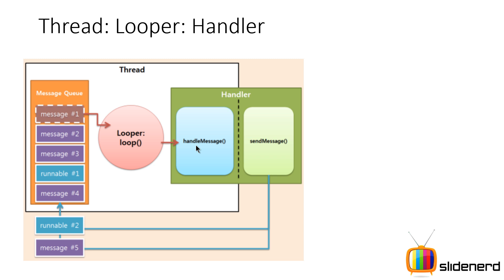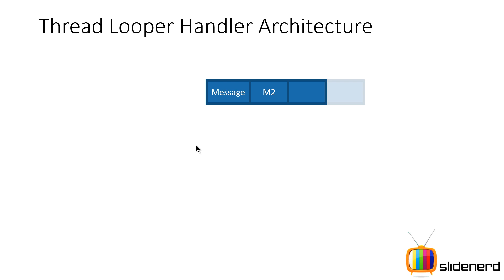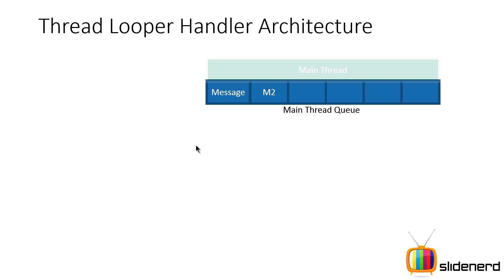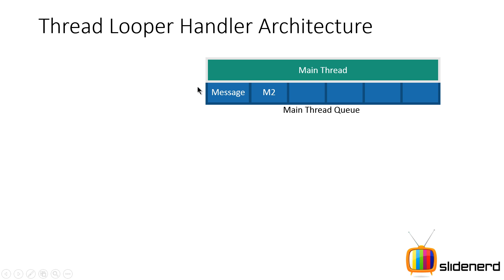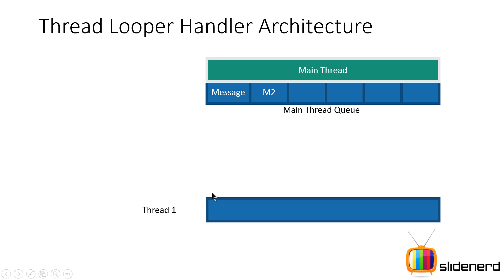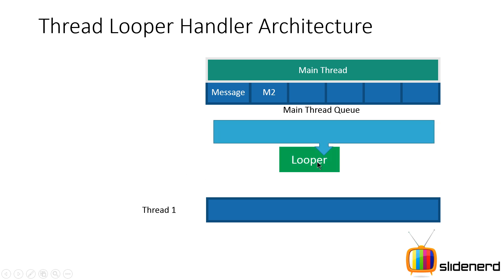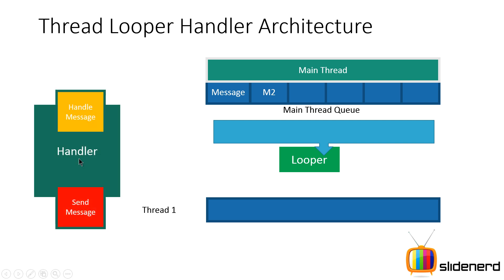Let's explore this idea in more detail. There are several messages inside the main thread queue — this is the main thread and the blue boxes represent its queue. You have another thread called Thread One. There is our Looper sitting at the desk who's going to take one message at a time and try to understand what the message does. The Handler is capable of two things: it can handle messages that come from the Looper, and it can also send messages from a different thread.